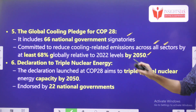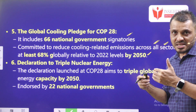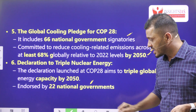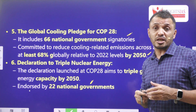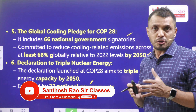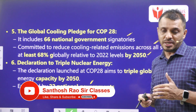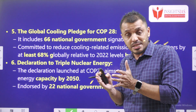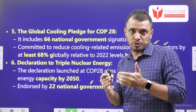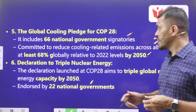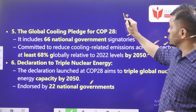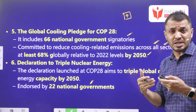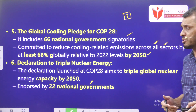The sixth outcome is the Declaration to Triple Nuclear Energy — tripling of nuclear energy by 2050, endorsed by 22 national governments. The Government of India is also thinking to encourage private players into nuclear energy. If you use nuclear energy in hydrolysis of water to produce hydrogen, what is that hydrogen called? There are different types — green hydrogen, brown hydrogen — which one is it?